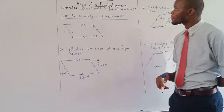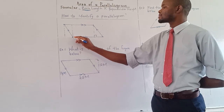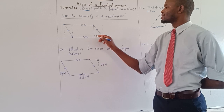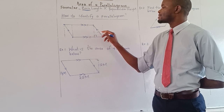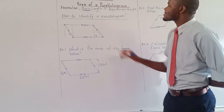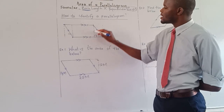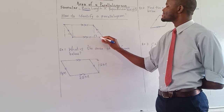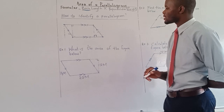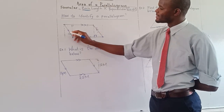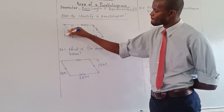Let us use examples. We are using this formula: base length times perpendicular height. The base length goes from here up to here — remember these two opposite lines are equal. Perpendicular height means the line which is meeting this base at 90 degrees. We are not using the slanting height; we want to use the perpendicular height.